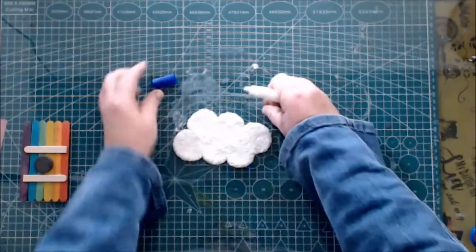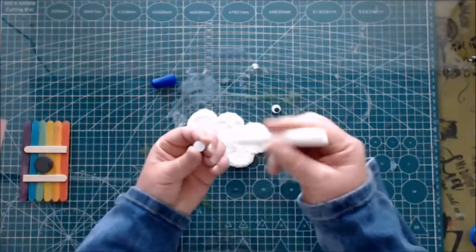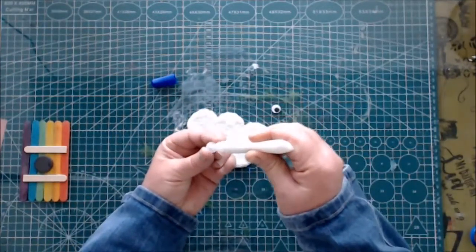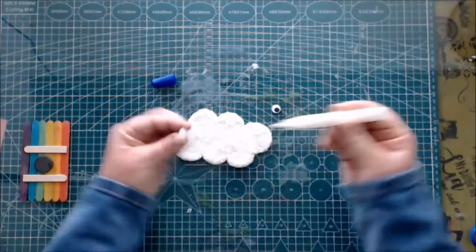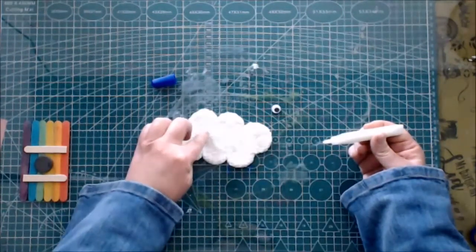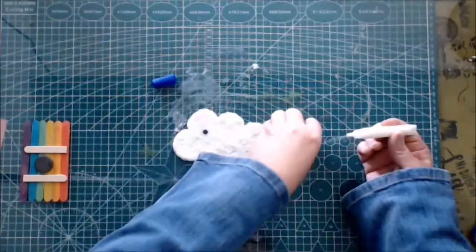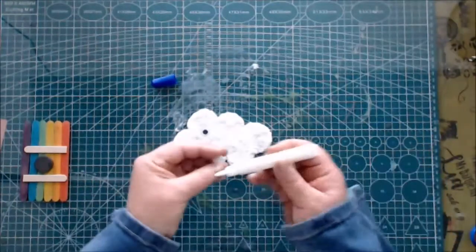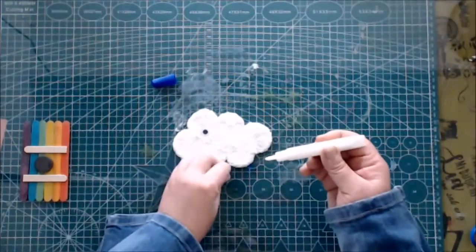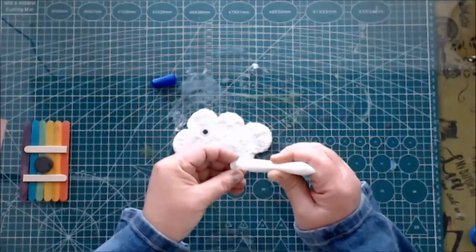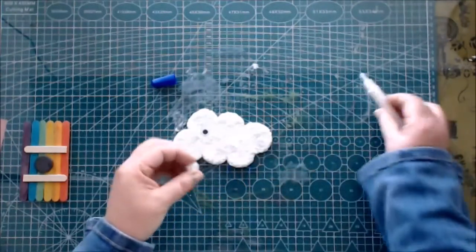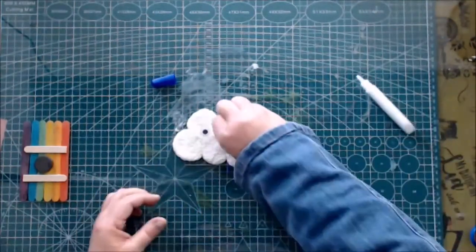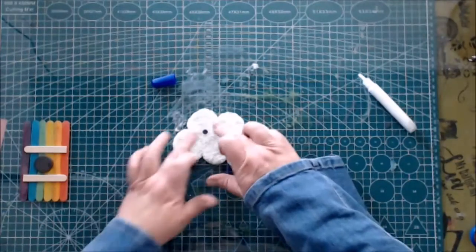Take your glue stick and just put a little bit of glue behind each eye. You can press it slightly into the fun foam. Don't press too hard, otherwise you are going to press it right through the fun foam.